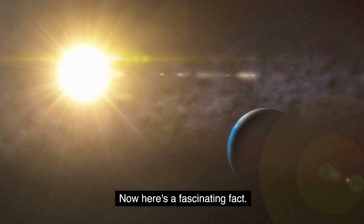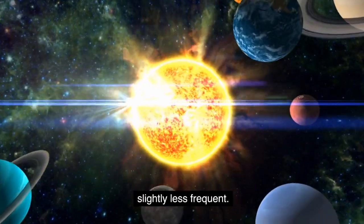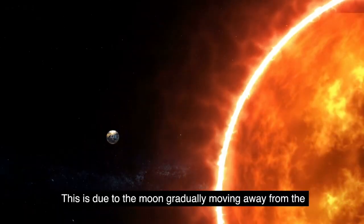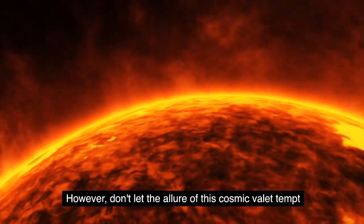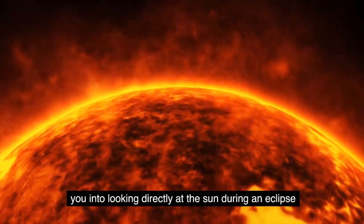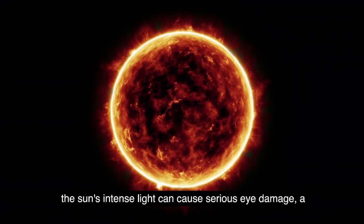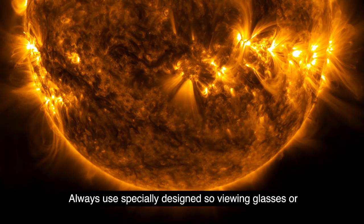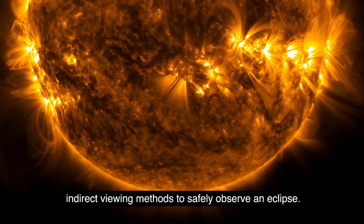Now, here's a fascinating fact. Did you know that total solar eclipses are becoming slightly less frequent? This is due to the moon gradually moving away from the Earth at a rate of approximately one and a half inches per year. However, don't let the allure of this cosmic ballet tempt you into looking directly at the sun during an eclipse without proper protection. The sun's intense light can cause serious eye damage, a condition known as solar retinopathy. Always use specially designed solar viewing glasses or indirect viewing methods to safely observe an eclipse.